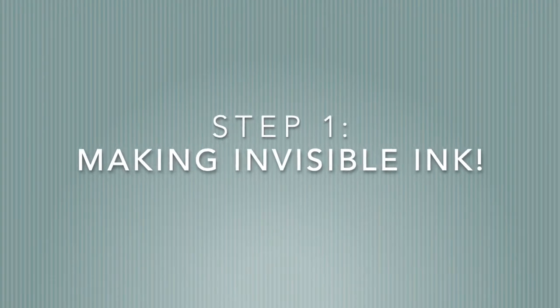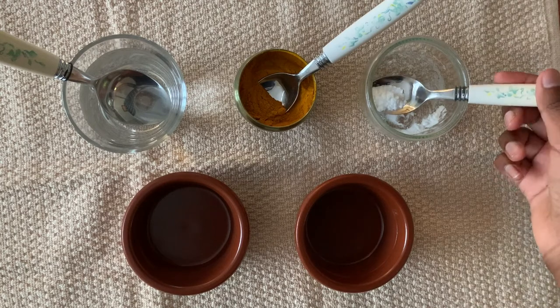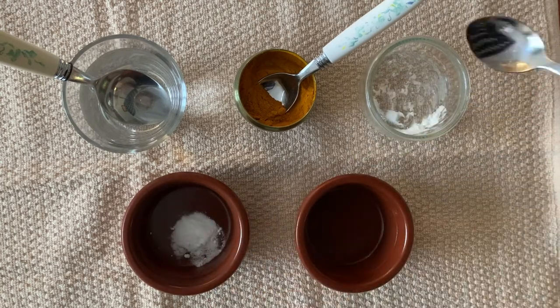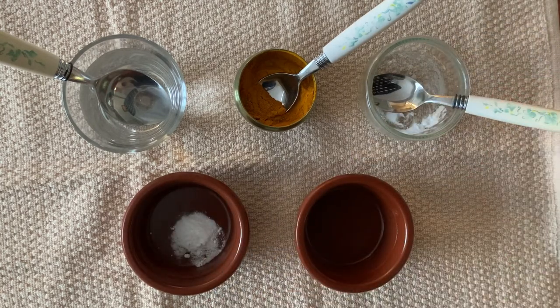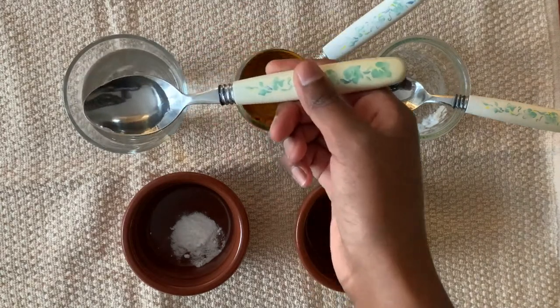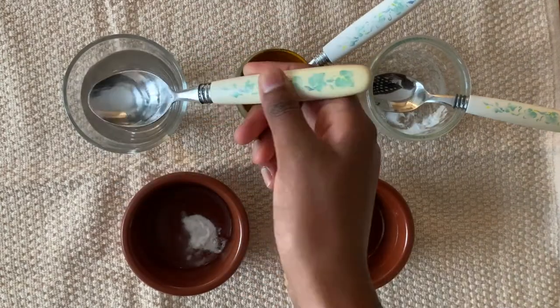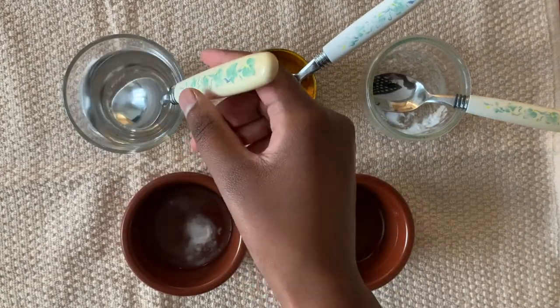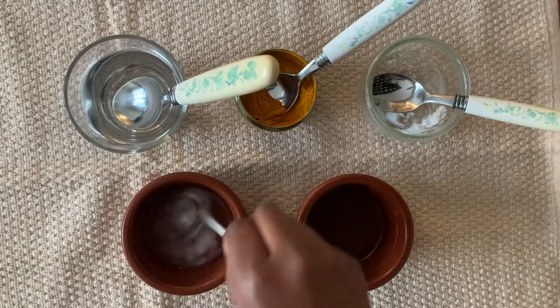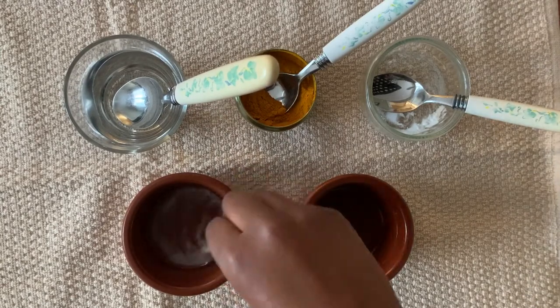First we'll make invisible ink using baking soda. Add half a spoon of baking soda, then add two spoons of water. Mix well using your q-tip. This will be your invisible ink solution.